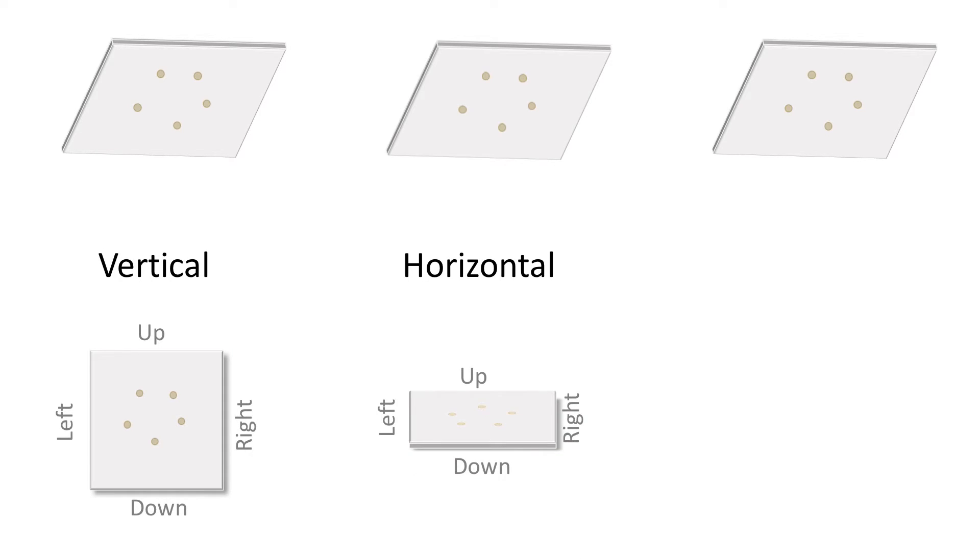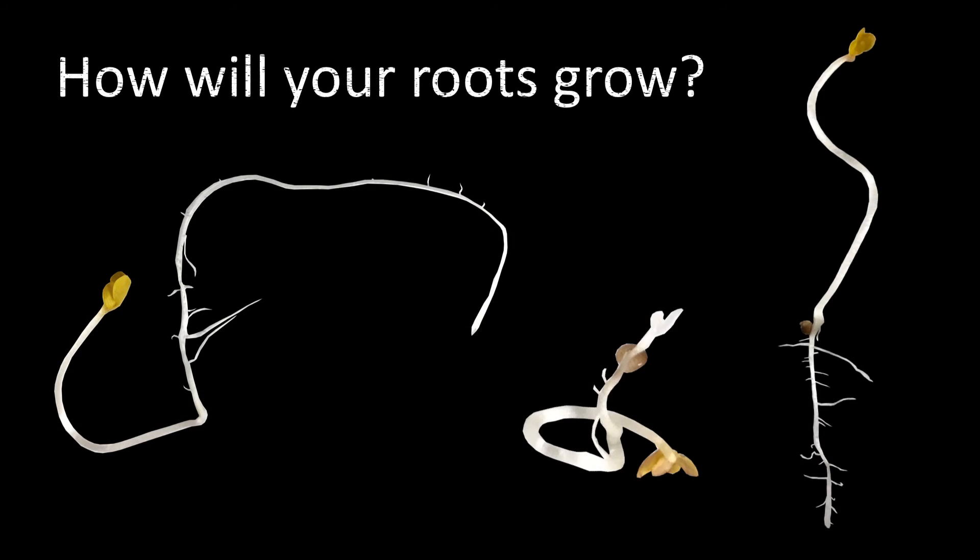Place one bag vertically, the second bag horizontally and the last bag vertically again, but rotate it by 90 degrees every other day. How do you think your roots will grow?